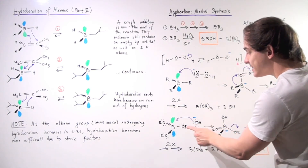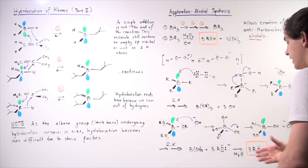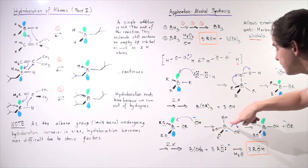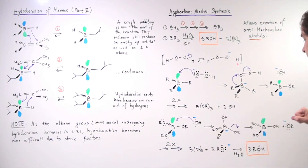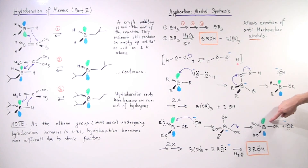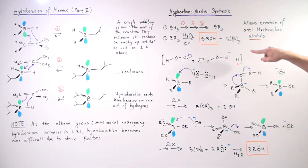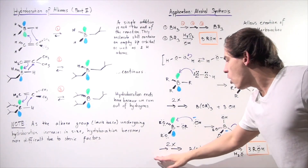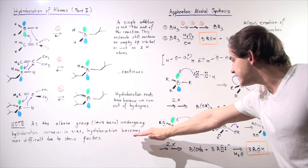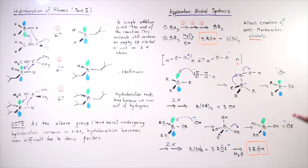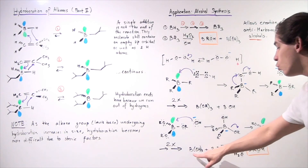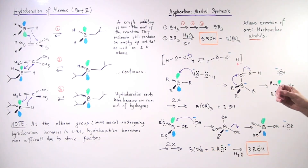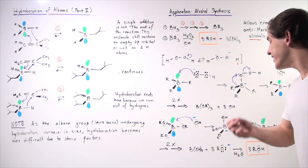The Lewis base attacks the Lewis acid, forming an unstable intermediate with a negative charge on boron. The OR group then detaches, forming a negatively charged RO group and a boron now bearing one OH group. Two more identical reactions take place using the two remaining OH groups, and we ultimately produce B(OH)3 and three identical RO⁻ groups.